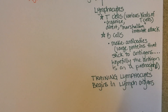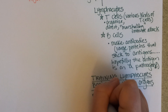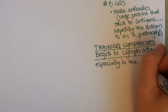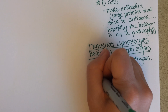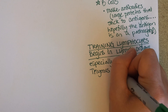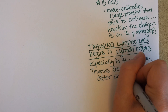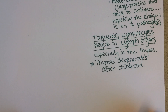Training for the lymphocytes begins in the lymph organs, especially in an organ called the thymus. The thymus degenerates after childhood — somewhere around age 10. This means that the training your lymphocytes receive in childhood is going to be a huge determinant of your health, both in fighting infection and avoiding autoimmune disease as an adult.